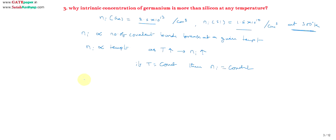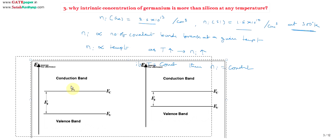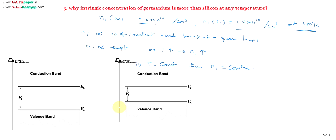Now we will see why Ni is more in germanium and less in silicon. If you observe the energy band diagrams of silicon and germanium: for silicon, Eg at 0 Kelvin is 1.21 eV and at 300 Kelvin it is 1.12 eV. For germanium, Eg at 0 Kelvin is 0.785 eV and at 300 Kelvin it is 0.72 eV. At any temperature, the energy gap of germanium is lesser than that of silicon.